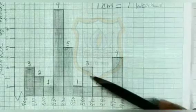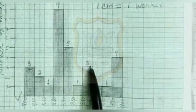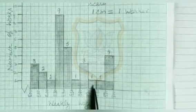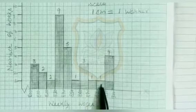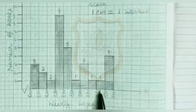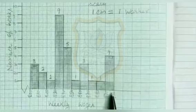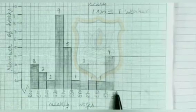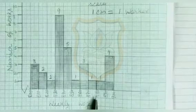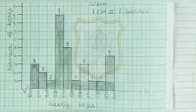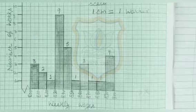The height of this bar shows the frequency of class interval 860 to 870, that is 3. The height of this bar shows the frequency of class interval 870 to 880, that is 1. The height of this bar shows the frequency of class interval 880 to 890, that is 1. The height of this bar shows the frequency of class interval 890 to 900, that is 4. There is no gap between the bars because this is a histogram — as you know, there is no gap between the bars since there is no gap between the class intervals in a histogram.